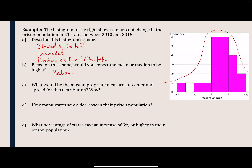Part C asks: what would be the most appropriate measure for the center and the spread of this distribution? When a distribution is symmetric, we use the mean for the center and the standard deviation for the spread. But when a distribution is skewed or has outliers, we use the median for the center and the IQR for the spread. In this case, we would use the median for the center and the IQR for the spread, since the distribution is skewed left.